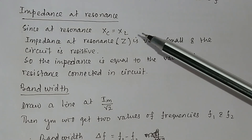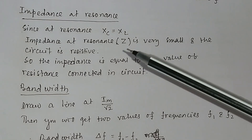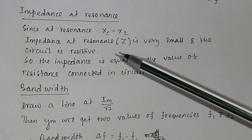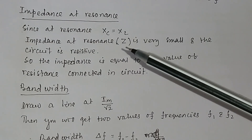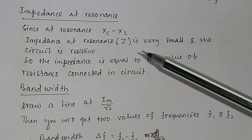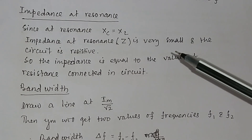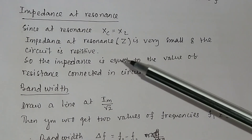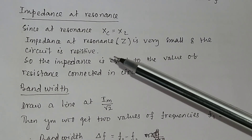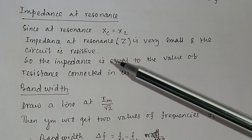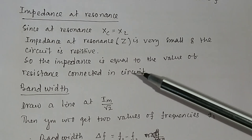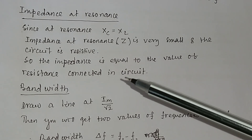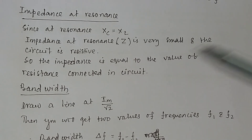What is impedance at resonance? Since at resonance Xc is equal to XL, the impedance at resonance Z is very small and the circuit is basically a resistive circuit. So the impedance equals the value of resistance connected in the circuit.